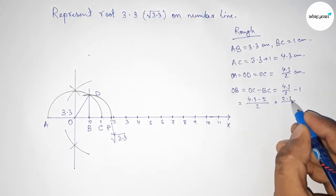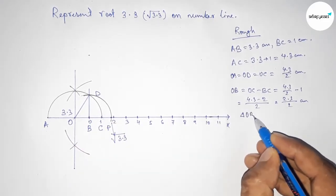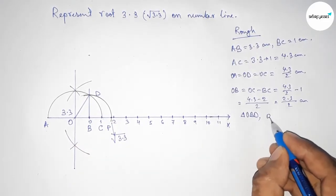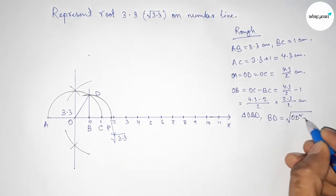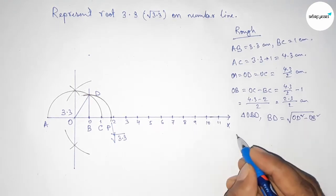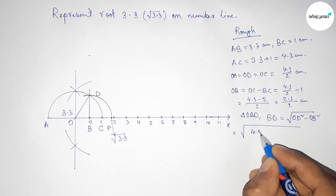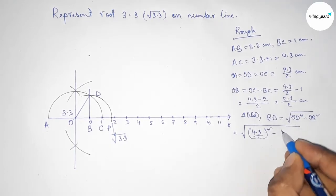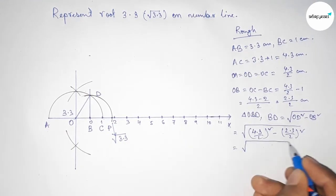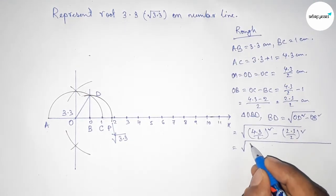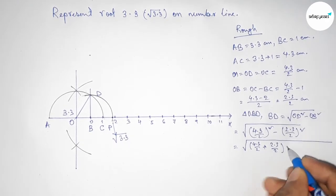Now from right angle triangle OBD, we can write BD equals root over OD squared minus OB squared by Pythagoras theorem. Putting the values of OD and OB and applying the formula a squared minus b squared equals a plus b times a minus b, we apply the formula here.